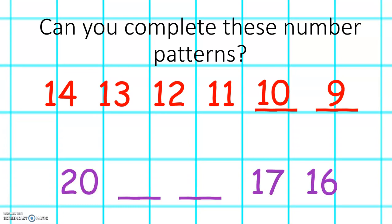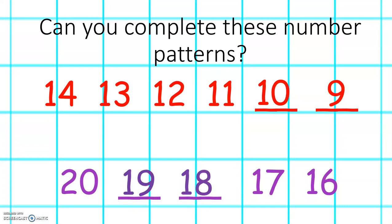This one is a little bit tricky. We have 20, missing number, missing number, 17, 16. What do you think the missing numbers will be? Excellent. The missing numbers are 19 and 18. 20, 19, 18, 17, 16. The numbers are getting one less each time.